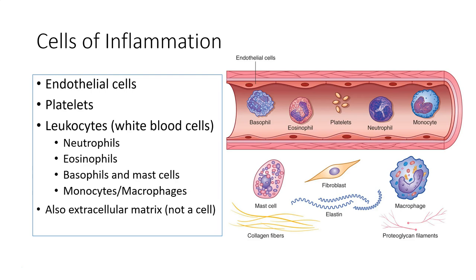We will start by looking at cells of inflammation. This includes the endothelial cells, platelets, our white blood cells — also known as leukocytes — and, while not a cell, we'll look at the extracellular matrix, which plays a vital role in inflammation.